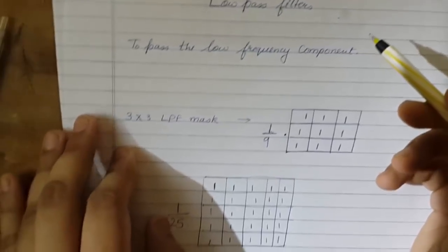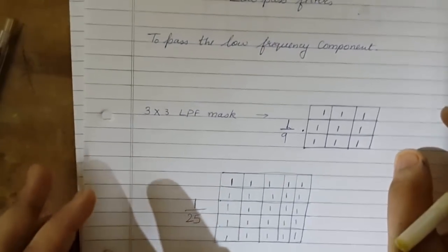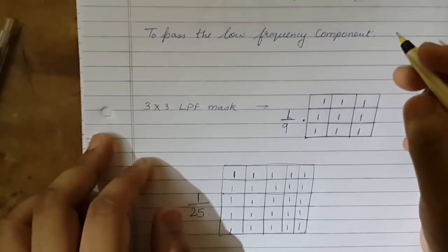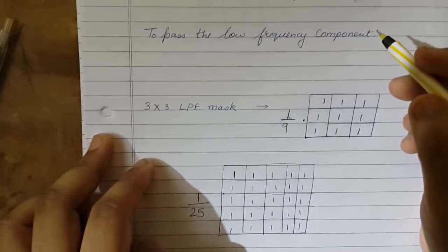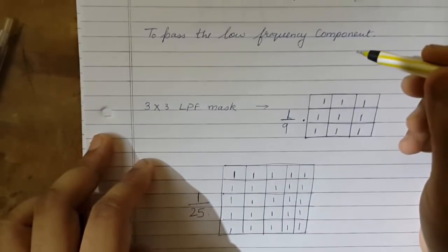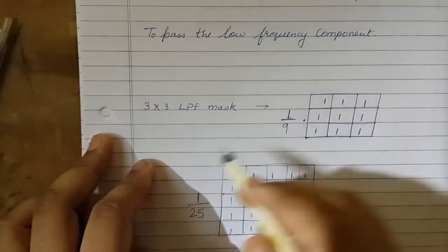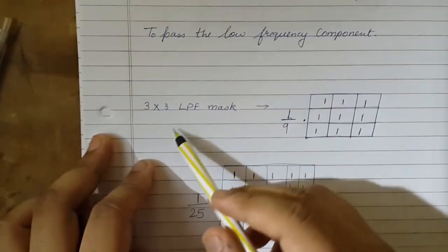We can also say that low-pass filter is smoothing the image. Here I have drawn a 3 by 3 low pass filter mask. Usually a low pass filter mask is nothing but a matrix of ones.